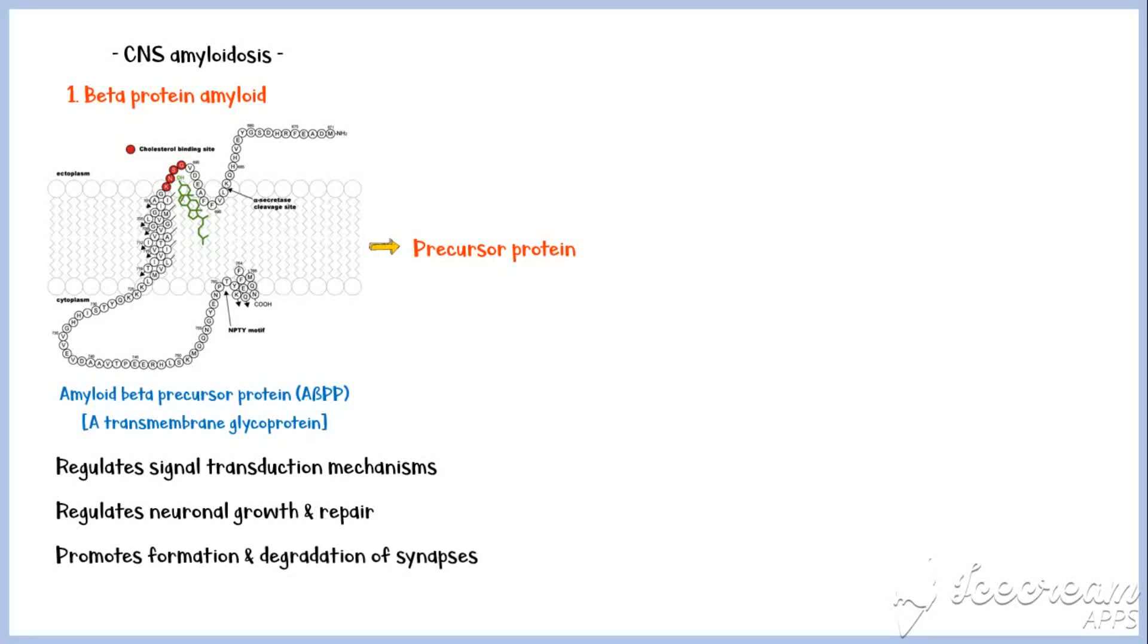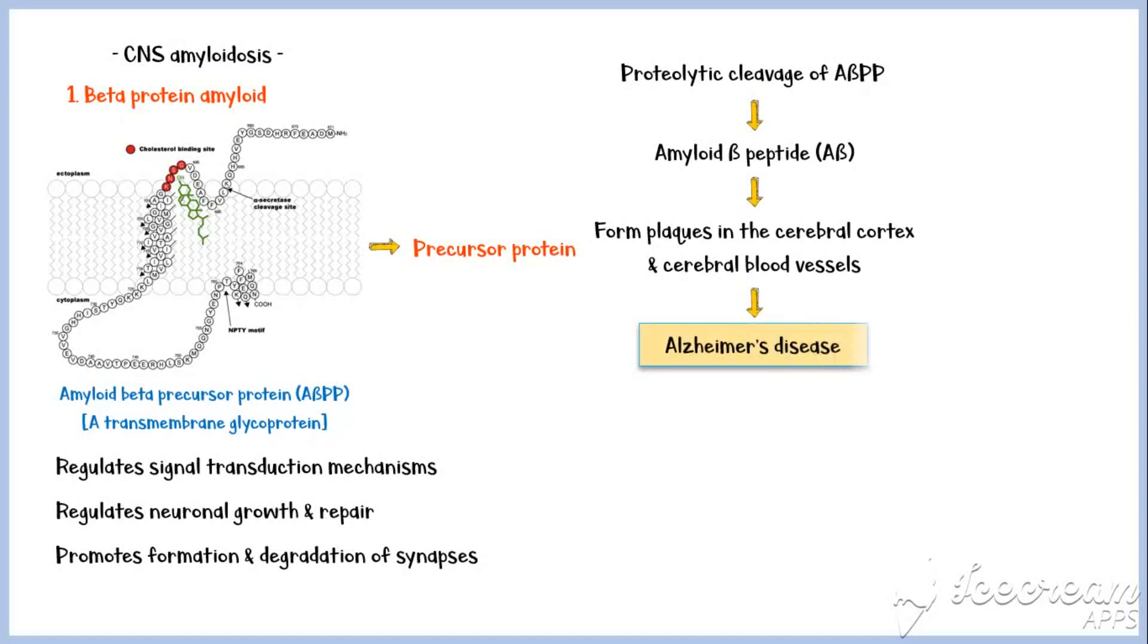In beta-protein amyloidosis, proteolytic cleavage of amyloid beta-precursor protein yields amyloid beta-peptide, which accumulates and forms plaques in the cerebral cortex and cerebral blood vessels, causing Alzheimer's disease.